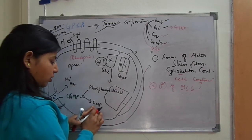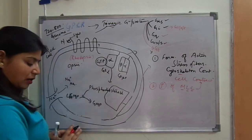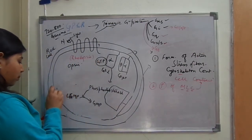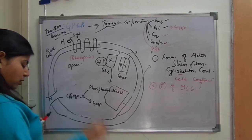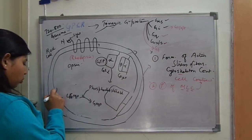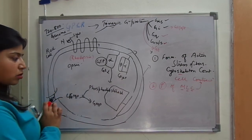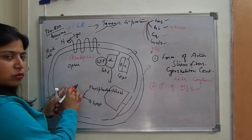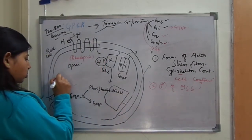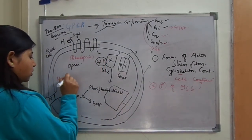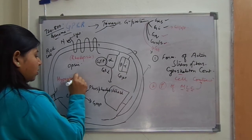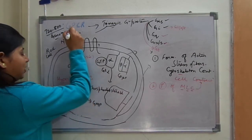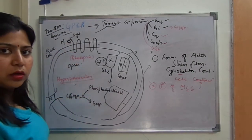When cyclic GMP is converted to GMP, the cyclic GMP levels are lowered inside the cell. If cyclic GMP levels are lowered, the sodium channel will be closed. If the sodium channel is closed, sodium cannot enter — there is loss of sodium, so there is no depolarization; instead, hyperpolarization occurs as a result of light acting on the rod cells.